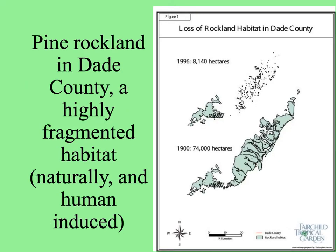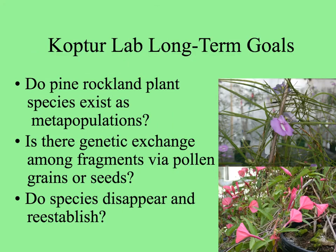Let's look more at the pine rockland — shown in the picture as the lower green area — its original extent in 1900, and the upper picture from about 20 years ago showing deforestation and changes in the landscape, especially anthropogenic habitat fragmentation. In my lab, we've been working for a number of years on pine rockland plants, trying to figure out if they exist as metapopulations exchanging genes through pollen movement on pollinators or seed dispersal.